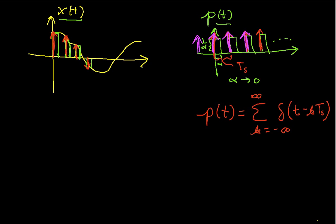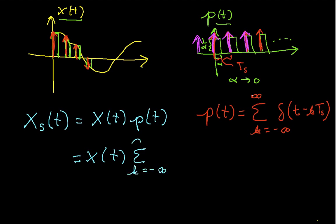Now, again, when I take x and multiply it by p, I get samples, and the resulting signal I will call x sub s for a sampled version of x. And this is equal to x multiplied by this p. And because p is this train of impulse responses that looks like this, I can write this as x times the summation from k going from minus infinity to infinity of delta t minus k t sub s. So, I just plugged in the definition here.